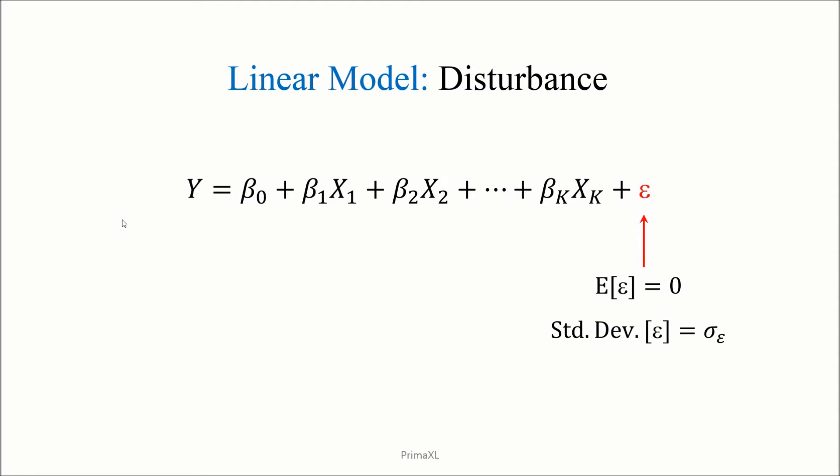This epsilon term is called a disturbance or the error. Its average value is 0 and its standard deviation is denoted as sigma sub epsilon.